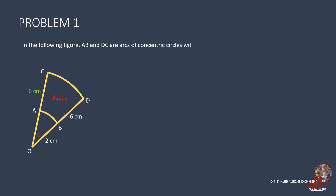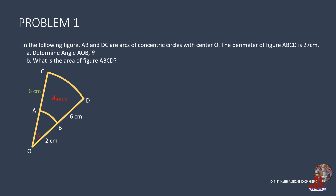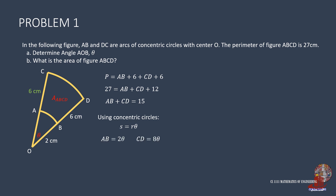If the perimeter is changed to 27 cm with the same configuration: 27 equals AB plus CD plus 12, where AB plus CD simplifies to 15. The arcs AB and CD using S = R theta remain the same: AB as 2 theta and CD as 8 theta. Combining: 2 theta plus 8 theta equals 15, so 10 theta equals 15 and theta is 1.5 radians.